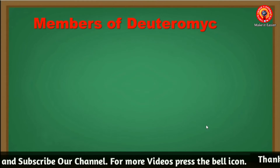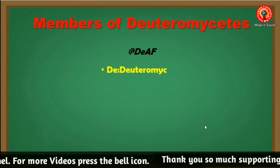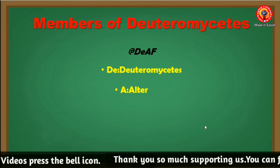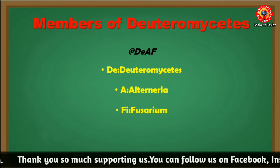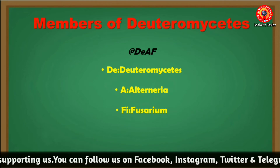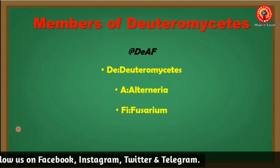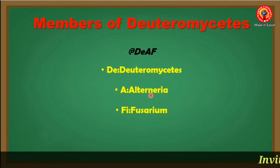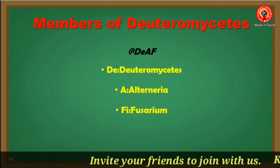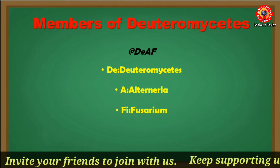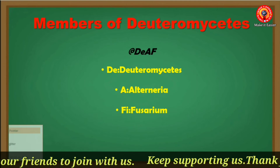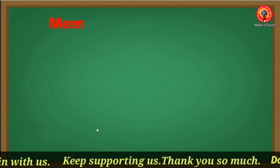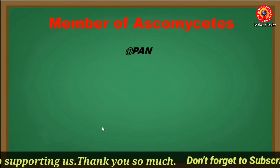The third mnemonic is for Deuteromycetes. To remember the members of Deuteromycetes, memorize the word 'DEEP' — the meaning of 'deep' in Nepali is 'bahiro' — where D stands for Deuteromycetes, E for Alternaria, and the remaining letters for Fusarium.